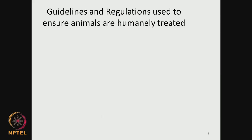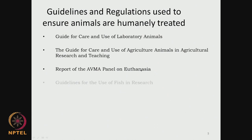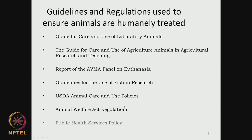There are a lot of guidelines and regulations so that the animals are treated as humanely as possible. That is very, very important. There is something called the Guide for Care and Use of Laboratory Animals, and the Guide for Care and Use of Agricultural Animals in research and teaching, covering sheep, goat, cow and so on. There is also the AVMA panel report on euthanasia — in case animals have to be sacrificed, how humanely it is possible without causing pain — and guidelines for the use of fish in research, animal welfare act regulations, and public health service policies.